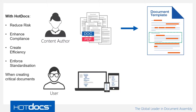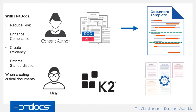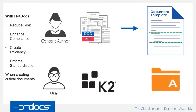In this instance today we're getting data from a different source — we're getting data from K2, which is managing the entire end-to-end process and interactions with other systems. Once we capture the information, we take that data from K2 and put it into our intelligent assembly engine, and out pops a document or suite of related documents. We capture that information for later so we can reuse it to produce multiple documents throughout the process.